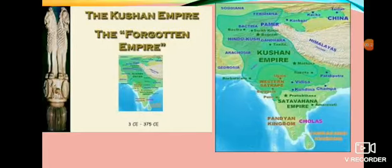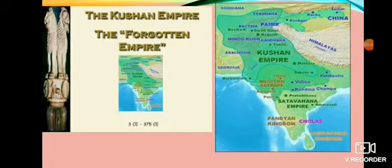The rule of the Kushanas was at its glory during the reign of Kanishka. He marked AD 78 — the year he came to the throne — as the beginning of a new era called the Shaka Era. The Shaka calendar started by him is officially followed by the Indian government. He also issued a large number of gold coins.